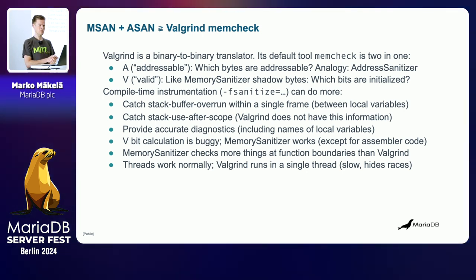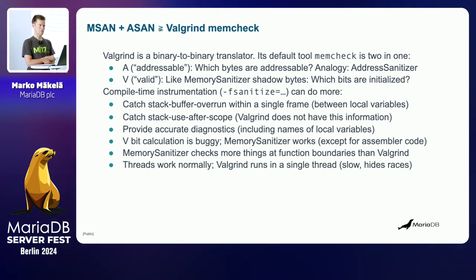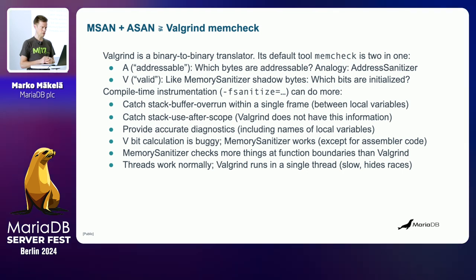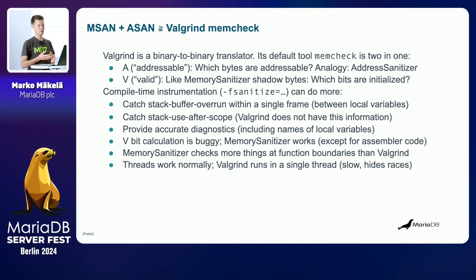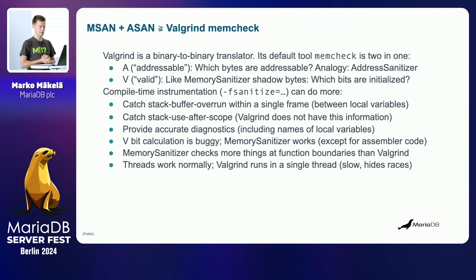Stack frame allocation of variables is dependent on compiler optimizations and compiler versions. One advantage over Valgrind is accurate diagnostics — you get to know all the local variable names, which are not all available in the debug information. Another thing that is annoying in Valgrind is that its vbit calculation is buggy for bitwise operations. For example, a bitwise OR between undefined and one is well-defined as one, but Valgrind claims it's uninitialized. Memory sanitizer checks more things at function boundaries than Valgrind because it simply has more information at compilation time.